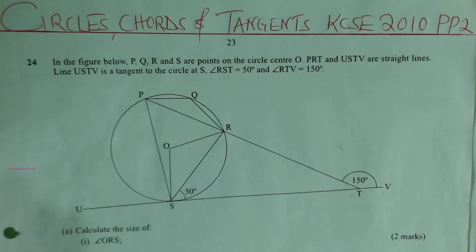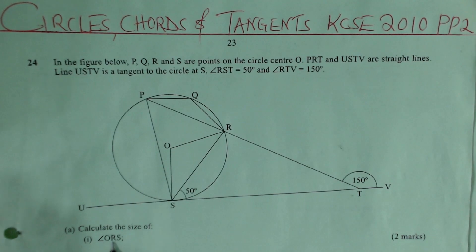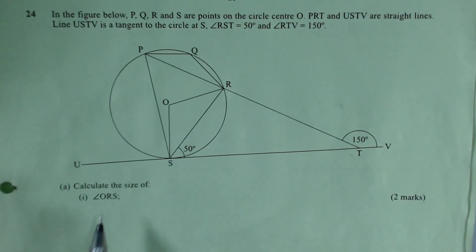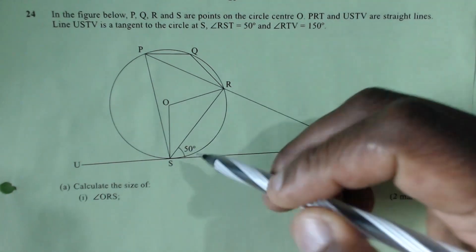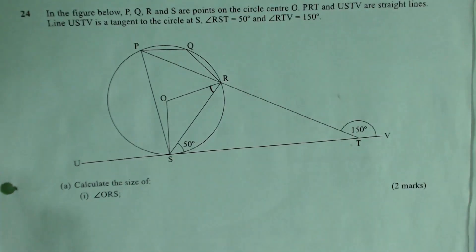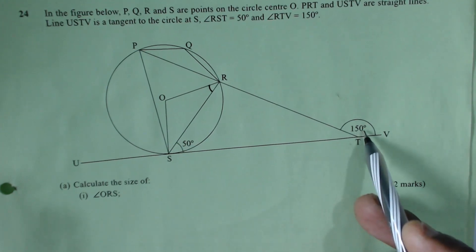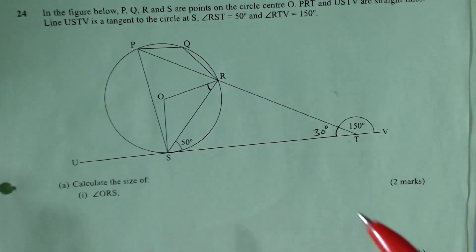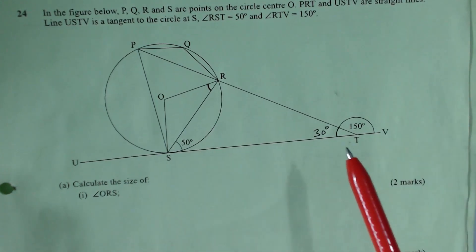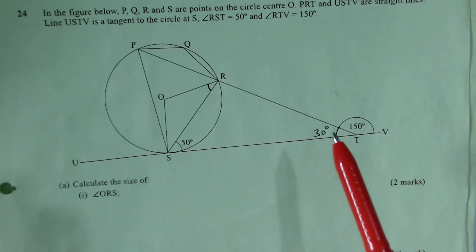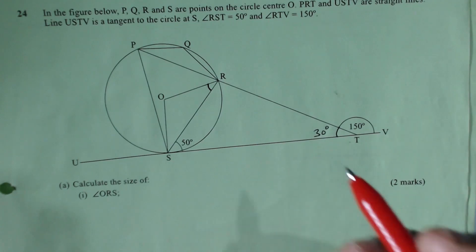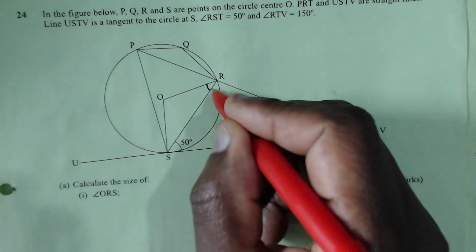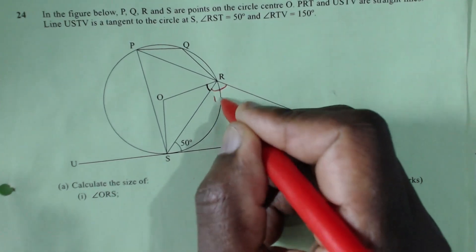For part a(i), we need angle ORS. The best approach is to fill in all angles we can using known properties. Since 150 degrees lies on a straight line, the adjacent angle is 180 minus 150 equals 30 degrees. In triangle RST, we have 50 degrees and 30 degrees; the angle sum gives 50 plus 30 equals 80, so the remaining angle is 100 degrees.